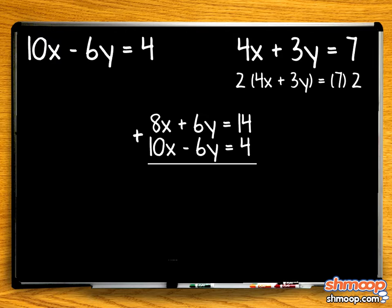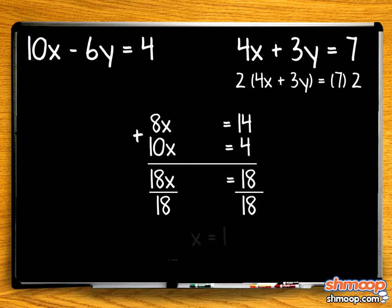8x plus 10x equals 18x. 6y minus 6y eliminates that variable altogether. Boom. Gone. 14 plus 4 is 18, so we have 18x equals 18. Divide both sides by 18, and we see that x just equals 1.